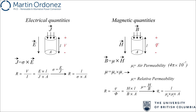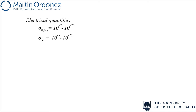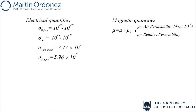It is the conductivity of a material that tells us if it can conduct current. Non-conducting materials such as Teflon or air have low conductivity, while metals such as aluminum or copper have very large conductivity. The same is true in the magnetic domain. If a material has high permeability, it is called a magnetic material. For non-magnetic materials, the relative permeability is close to 1. For magnetic materials used in power electronics, the relative permeability could range from a few tens to several thousands.